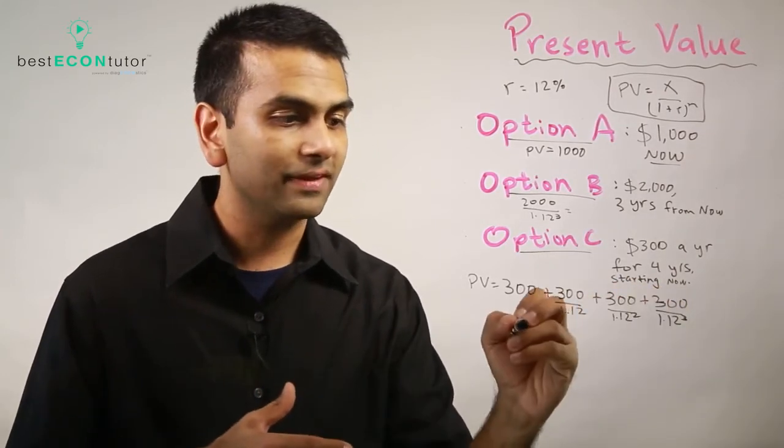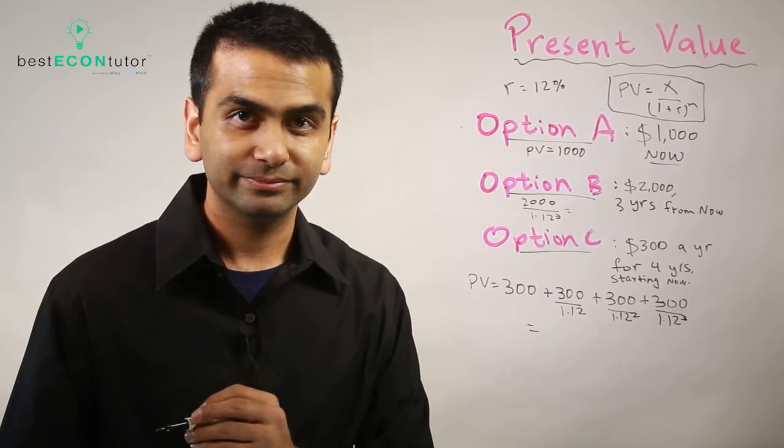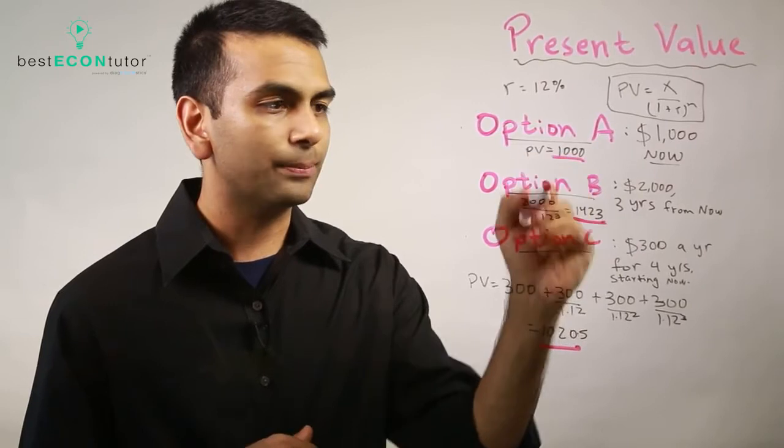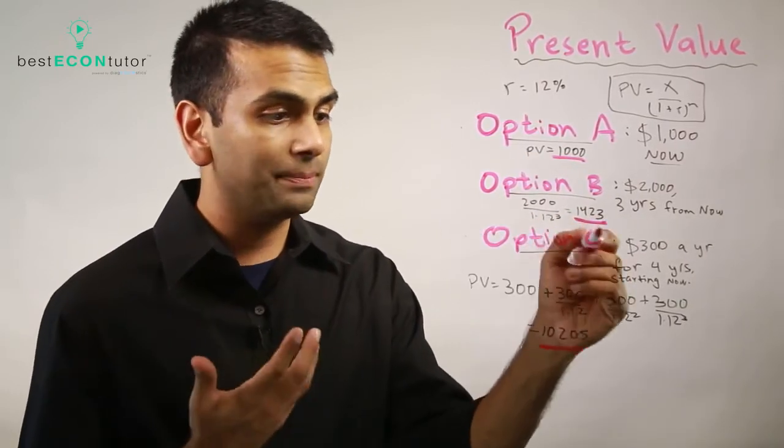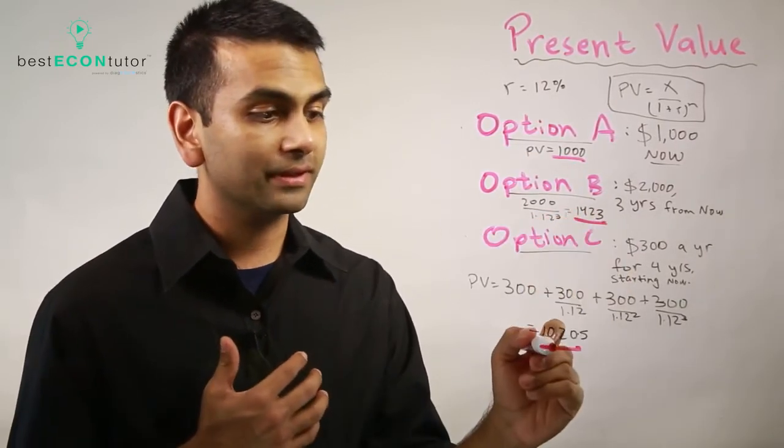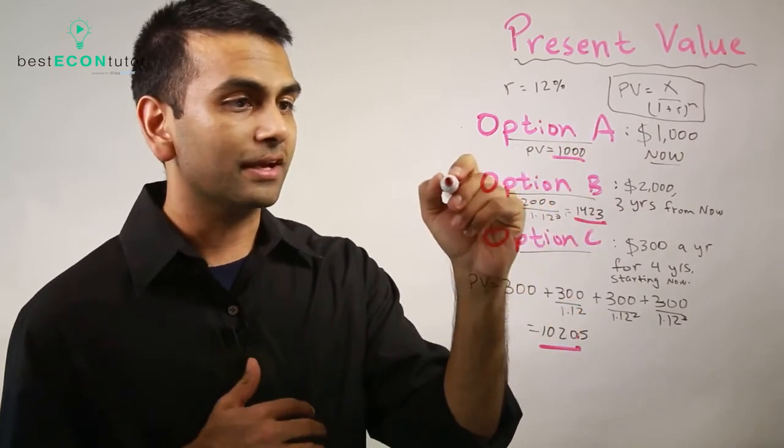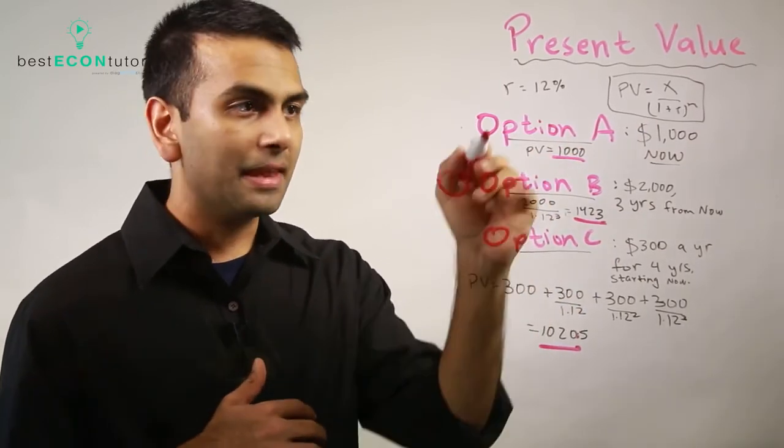So in conclusion, if we actually do the math, it turns out that looking at these three present values, the best thing is Option B because $1,423 is bigger than $1,020.50 and $1,000. So this is the most preferred.